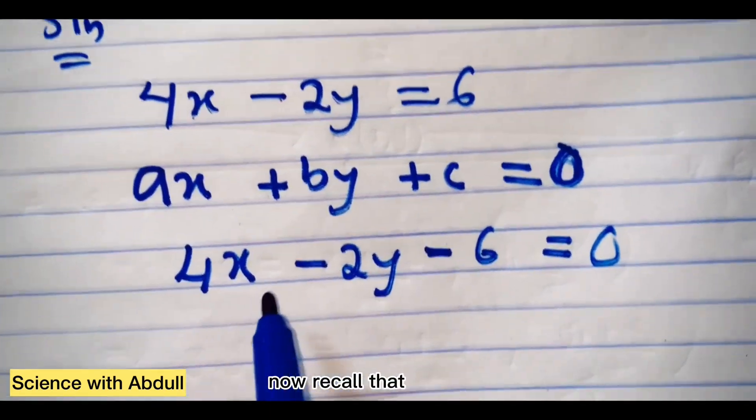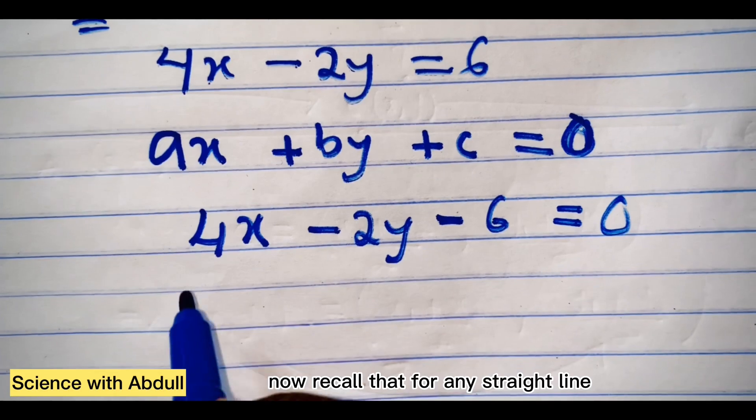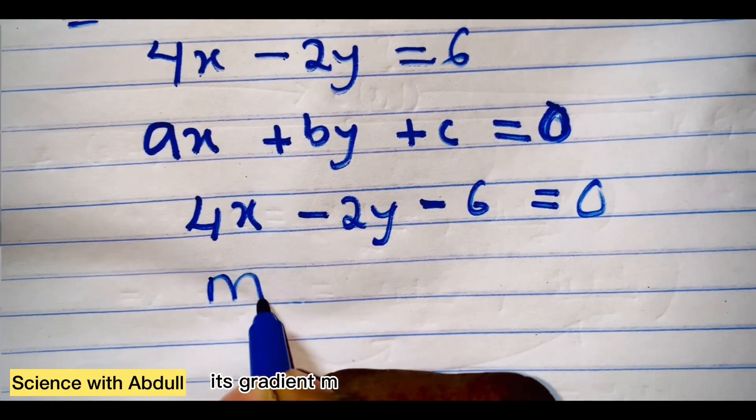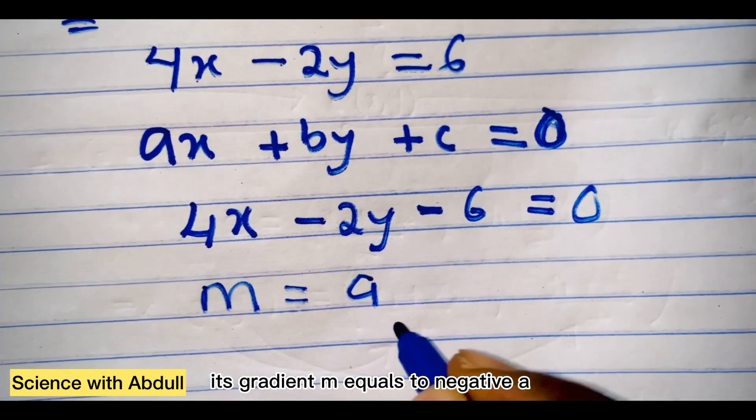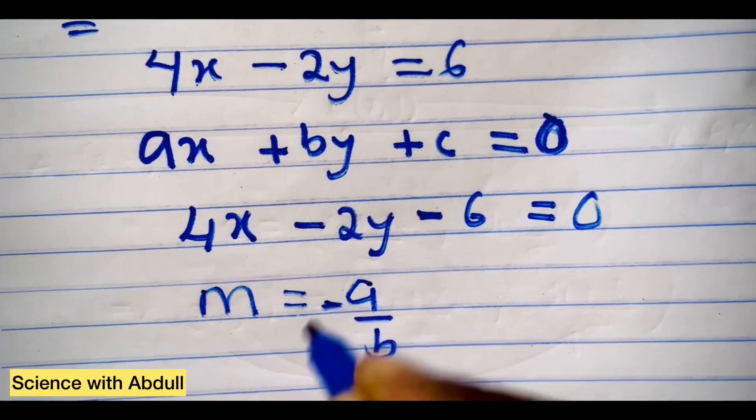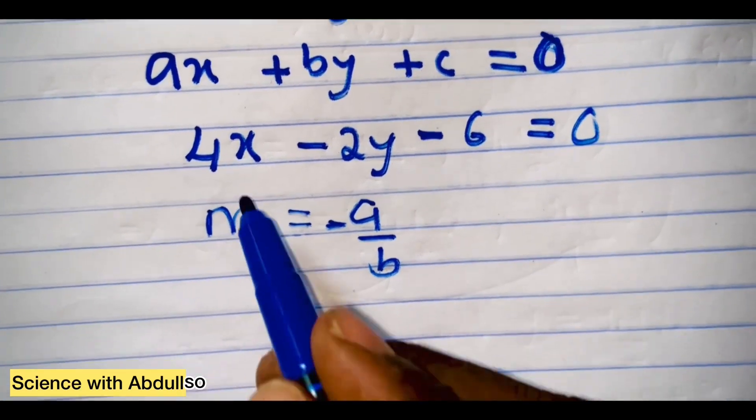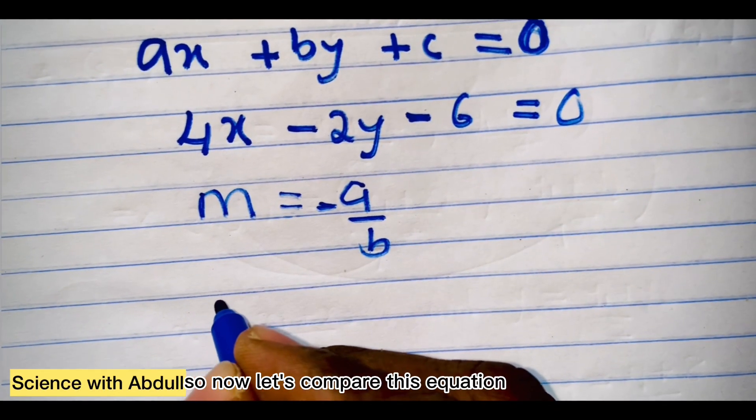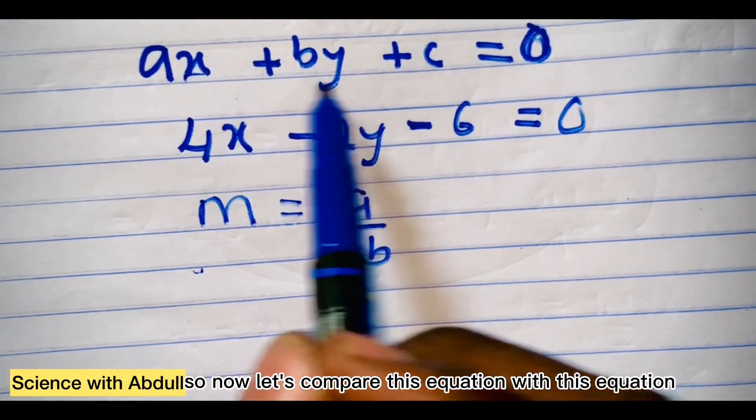Now recall that for any straight line, its gradient m equals to negative a divided by b. So now let's compare this equation with this equation.